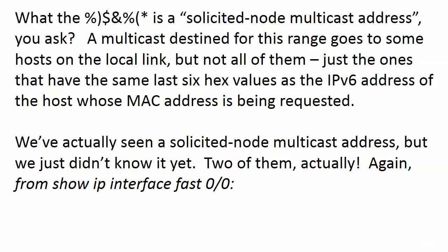A multicast destined for the solicited node multicast address — it's actually a kind of built-in range because it's going to go to some hosts on the local link, but not all of them. Just the ones that have the same last six hex values as the IPv6 address of the host whose MAC address is being requested.